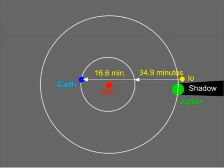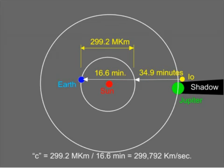He found that as the Earth moved away from the planet, the timings became later and later, but as the Earth returned towards the planet, the timings came earlier until they were the same again. He realised that this maximum delay of about 16 minutes 40 seconds in the timings, when the Earth was furthest from the planet, was the time taken for the light to cross the orbit of the Earth.